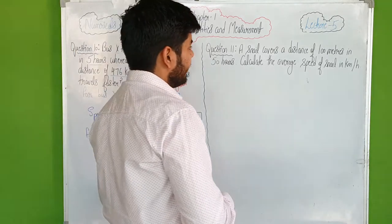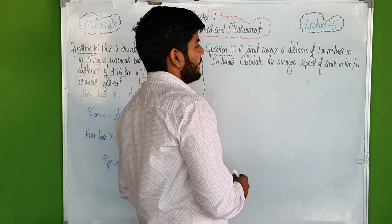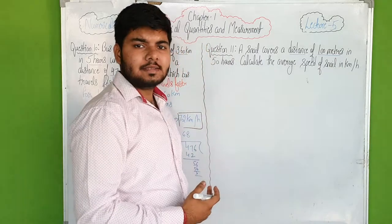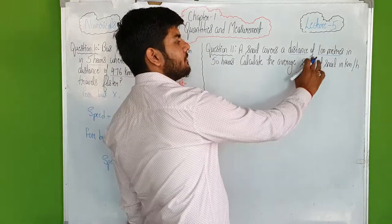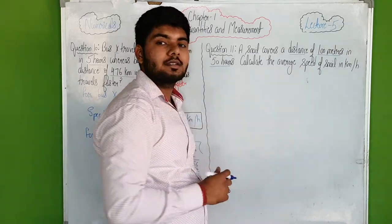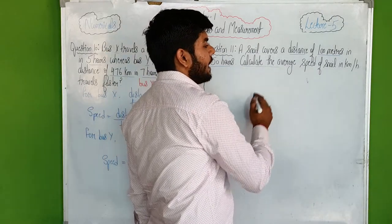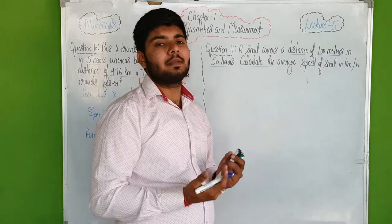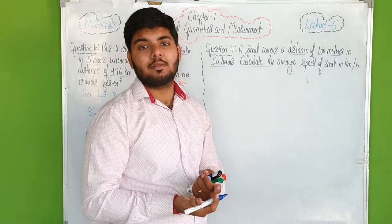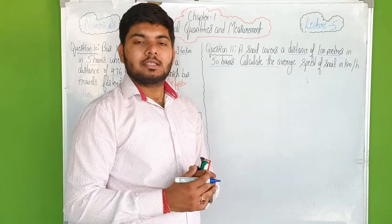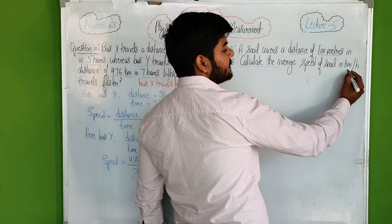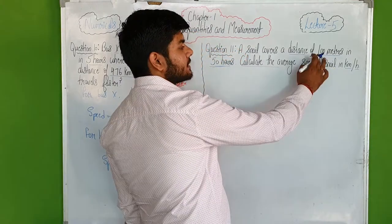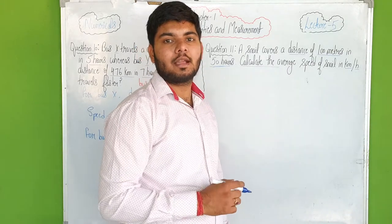In numerical 11, a snail covers a distance of 100 meters in 50 hours. We need to calculate the average speed of the snail in kilometers per hour. Since we have one data point, we use the basic speed formula. Time is already in hours, but the distance is in meters so we need to convert to kilometers.